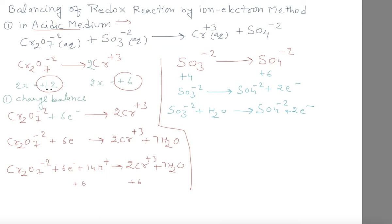I add 1 water on this side, so 2H⁺ will come on the other side, and the reaction is balanced. Oxygen: 3 plus 1 equals 4, and oxygen on the right is 4. Hydrogen is 2 on each side. This is now balanced. Here sulphur goes from plus 4 to plus 6 — loss of electrons — so this is the oxidation half reaction, and the other one is the reduction half reaction, because plus 12 reduces to plus 6.